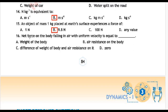Last MCQ, question 15: Net force on a body falling in air with uniform velocity is equal to — Option A: weight of body, Option B: air resistance on the body, Option C: difference of weight of body and air resistance, Option D: zero. Correct answer is Option D: zero.